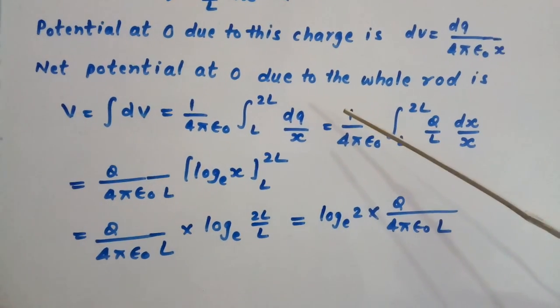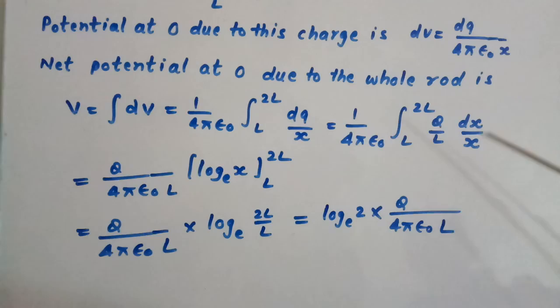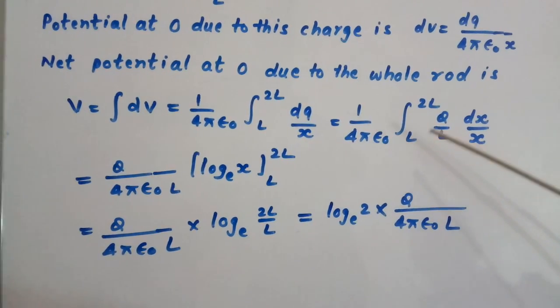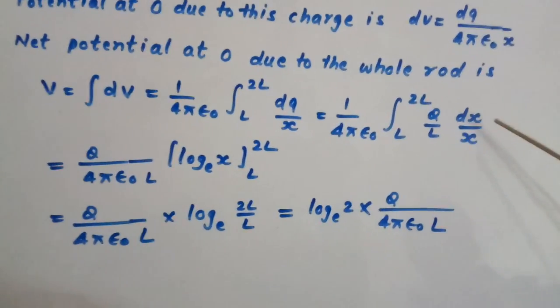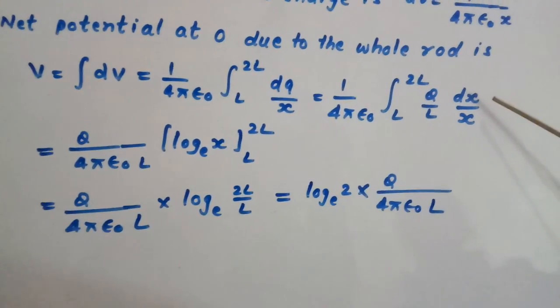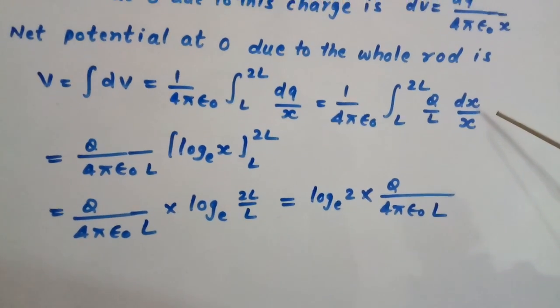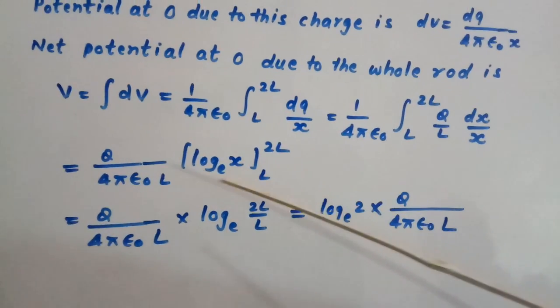So we get 1 upon 4πε₀ L to 2L integration Q upon L dx upon x. Integration of dx upon x gives log x with base e.